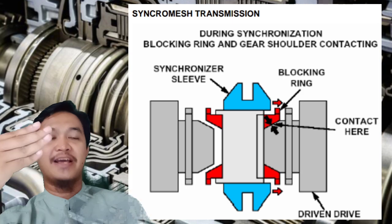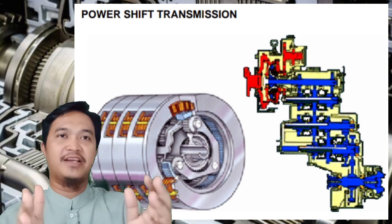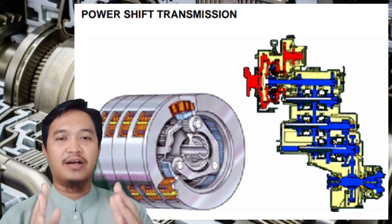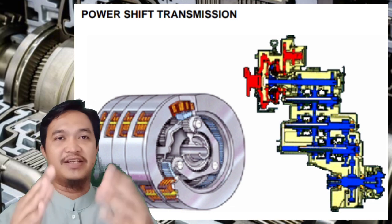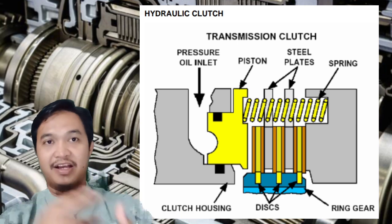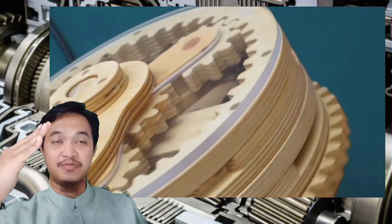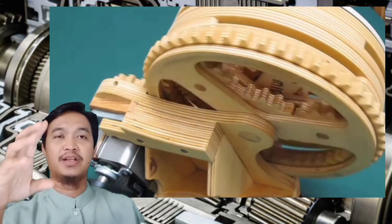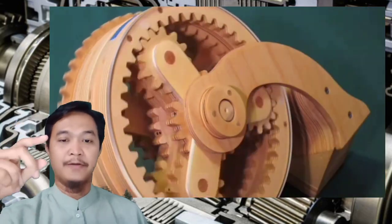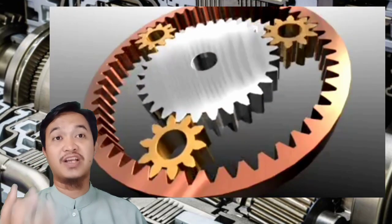Itu tadi yang termasuk ke dalam manual shift transmission. Sekarang kita masuk ke power shift transmission. Bedanya, kalau manual shift transmission pergeserannya adalah dengan cara manual atau mekanikal, maka power shift transmission menggunakan tenaga hidrolis. Biasanya mekanismenya adalah dengan adanya disc dan clutch untuk meneruskan tenaganya. Untuk dasar-dasar power shift transmission ini kita wajib mengetahui cara kerja dari planetary gearset, karena dibagi menjadi dua: tipe planetary dan tipe counter shaft.